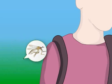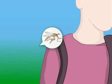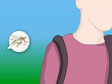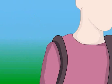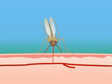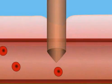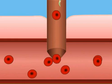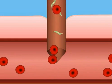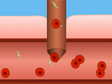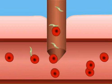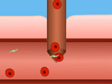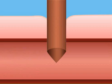Malaria is transmitted by the Anopheles mosquito. The malaria parasite, Plasmodium, depends on both humans and mosquitoes to complete its life cycle. An infected female mosquito bites a human for a blood meal, as the mosquito requires blood to produce her eggs. Having penetrated the skin, the mosquito injects anticoagulant saliva to stop the blood clotting and ensure an even-flowing meal. The malaria parasite is contained within the mosquito saliva and is transmitted into the human host at this stage.